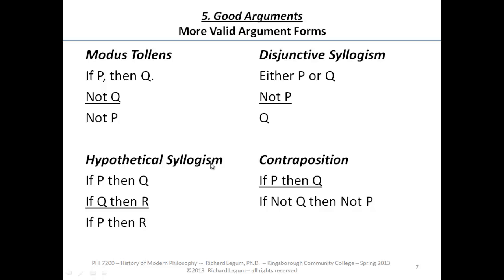For those with math-itis — the condition where your brain turns off the second you see anything that looks like mathematics — remember it's not mathematics. These are just placeholders: P being some statement, Q being another statement. If you take a look at a couple of examples, we're going to see this is a valid form of inference, a good connection between the premises and the conclusion.